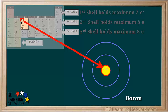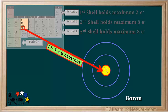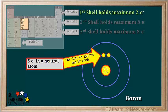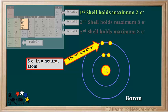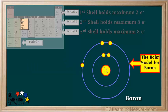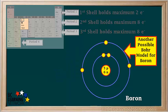Element number 5 is boron with five protons. 10.8 rounds to 11, so 11 minus 5 equals 6 neutrons — written as 6n. A neutral atom of boron has five electrons: the first two go into the first shell, and the third, fourth, and fifth electrons go into the second shell. One possible Bohr model for boron shows an electron pair and an unpaired electron. Another possible Bohr model shows three unpaired electrons in the second shell. Both models can be considered correct.